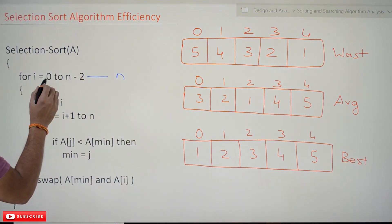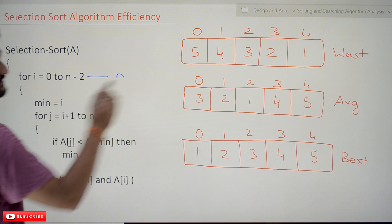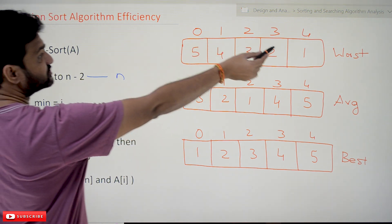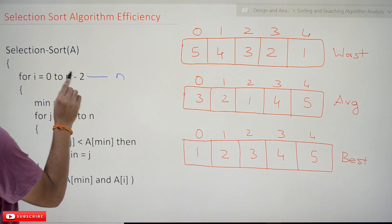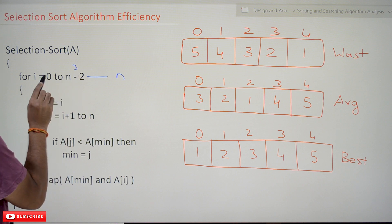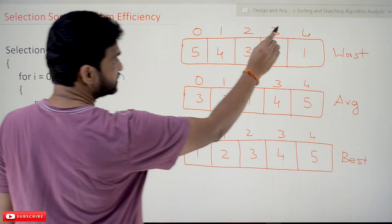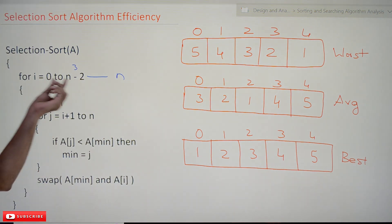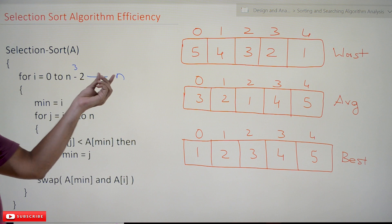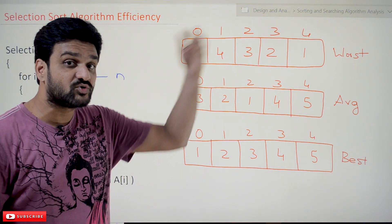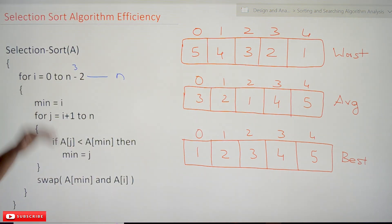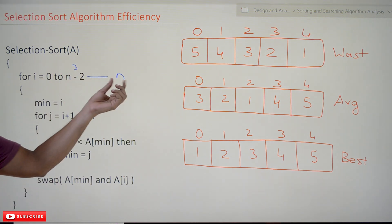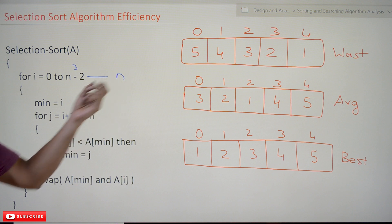For example, if you take this array with 5 elements, 0 to n−2 means 0 to 3, which means n−1 comparisons are done. One more comparison is needed to exit the for loop where the condition fails, so adding that it becomes n comparisons total. This point is very important to understand.